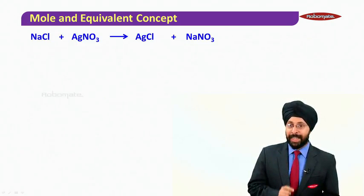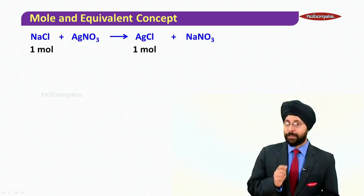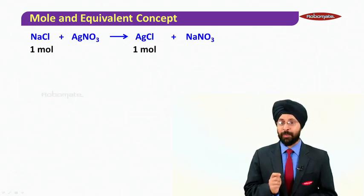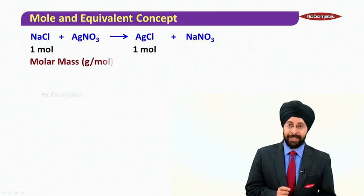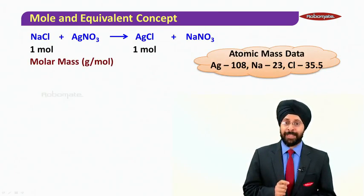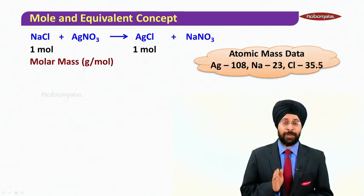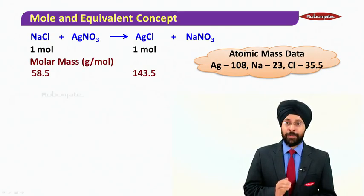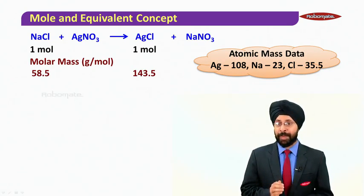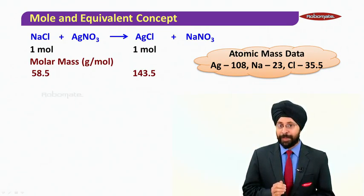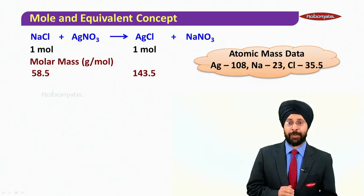So we write down the reaction and then we first do the stoichiometric analysis. One mole NaCl gives you one mole AgCl. So using the molar mass data, we have atomic weights given: silver 108, sodium 23, and chlorine 35.5. From here, we can calculate the molar mass of NaCl as 58.5 and that of AgCl as 143.5.